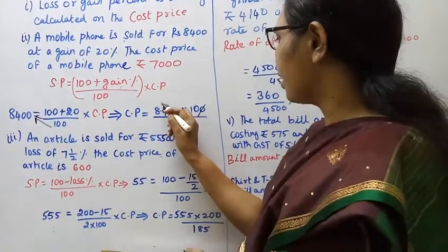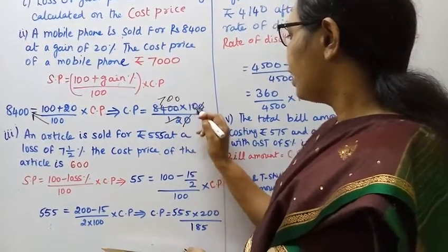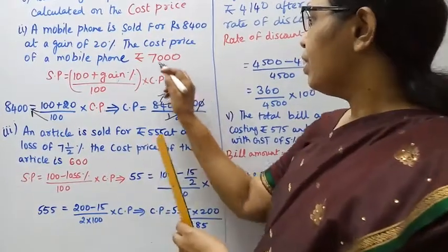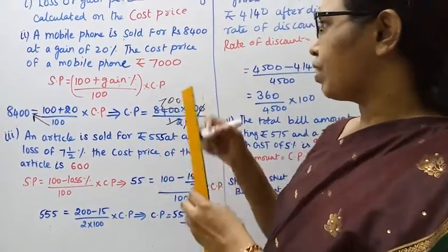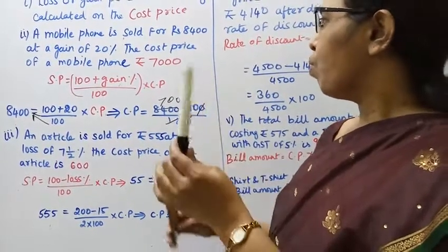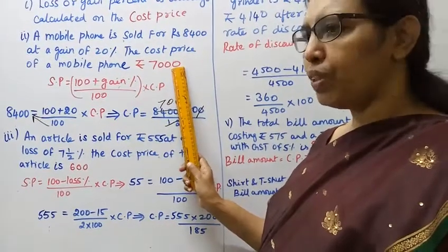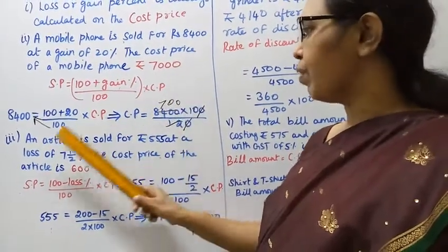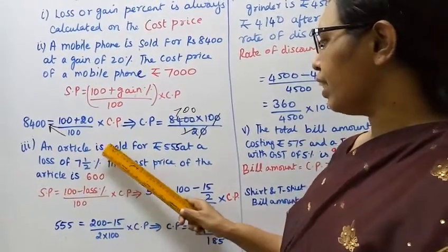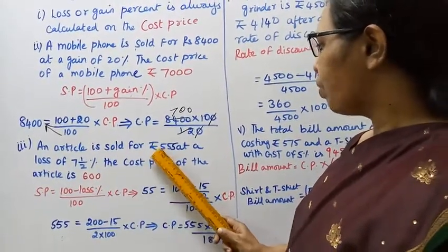7 times 700 is 4900... here is Rs. 0. Rs. 7000 — the cost price of the mobile phone is Rs. 7000. Third: an article is sold for Rs. 555.